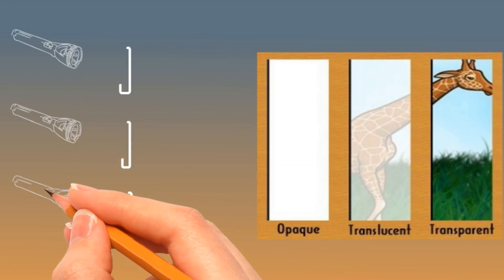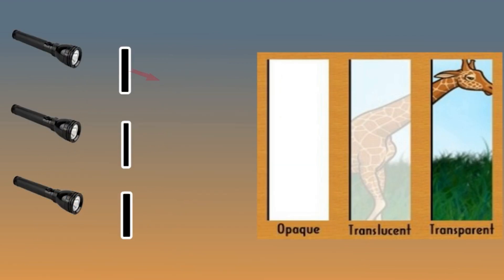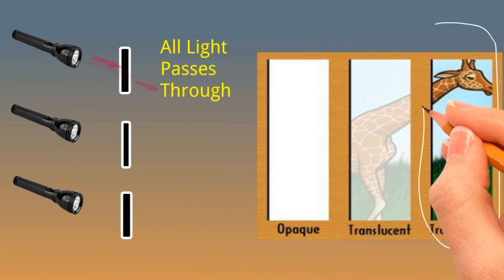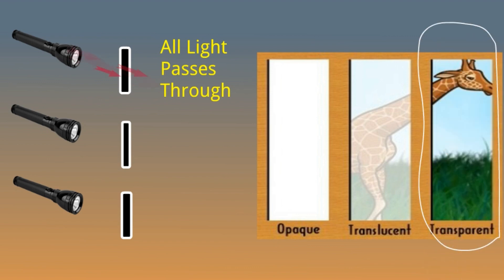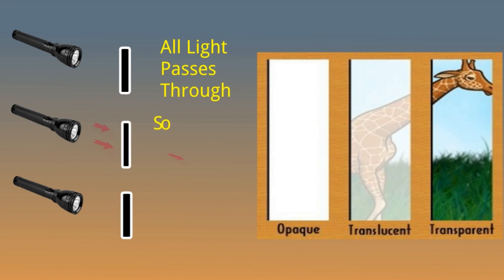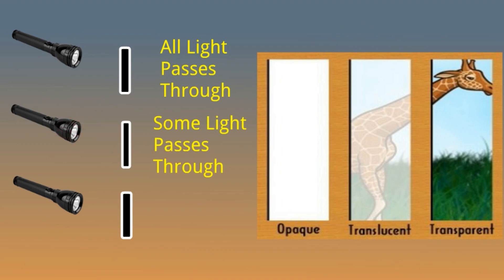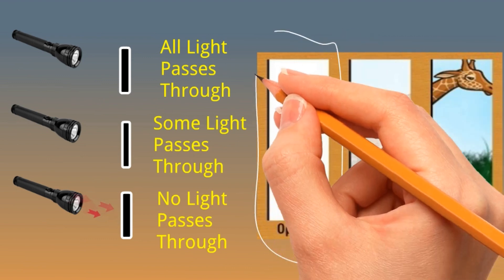Look at this comparison example. In the first object, all light passes through so we are able to see clearly through it — this object is known as a transparent object. In the second one, some light passes through so we can see partially — this object is known as a translucent object. In the third one, no light passes through and we cannot see anything — this is known as an opaque object.